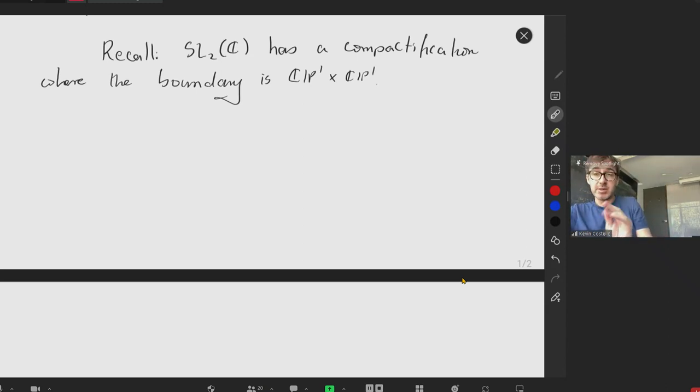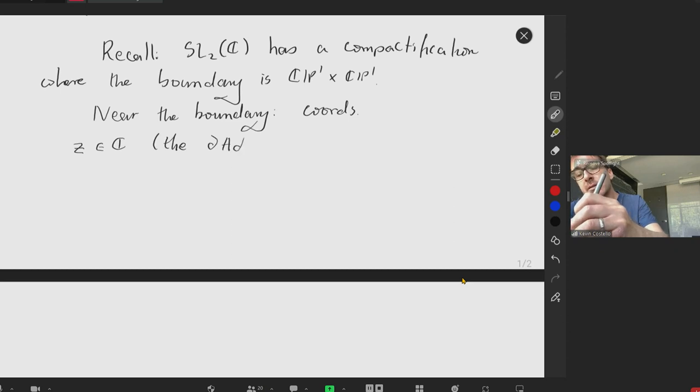So I'm going to give an explicit description of the geometry near the boundary. We have coordinates Z and C. This will be the chiral algebra plane. So this, we thought it was the boundary of AdS3. W in CP1, and also N, which is normal to the boundary.